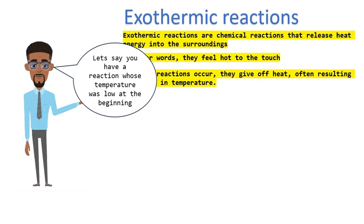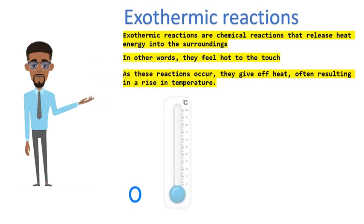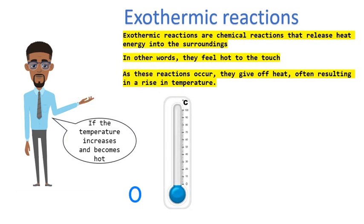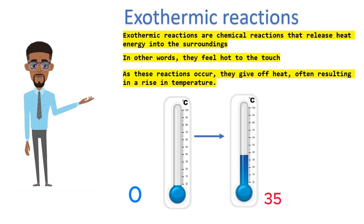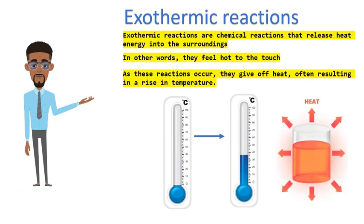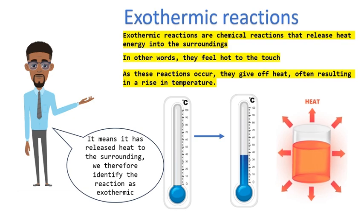Let's say you have a reaction whose temperature was low at the beginning — say at 0 degrees Celsius. If the temperature increases and becomes hot, to let's say about 35 degrees Celsius, it means it has released heat to the surrounding. We therefore identify the reaction as exothermic.